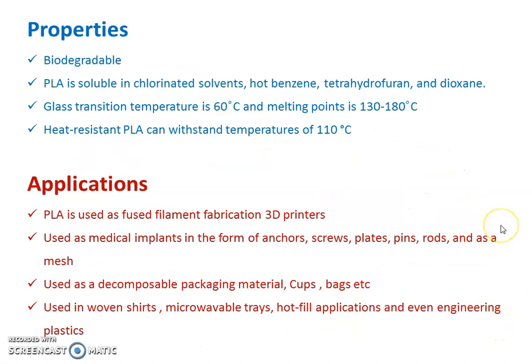What are the properties of polylactic acid? First, it is biodegradable. Polylactic acid is soluble in chlorinated solvents, hot benzene, tetrahydrofuran and dioxane. It has a glass transition temperature of 60°C and a melting point of 130 to 180°C. In terms of heat resistance, polylactic acid can withstand temperatures of 110°C. These are the important properties of polylactic acid.